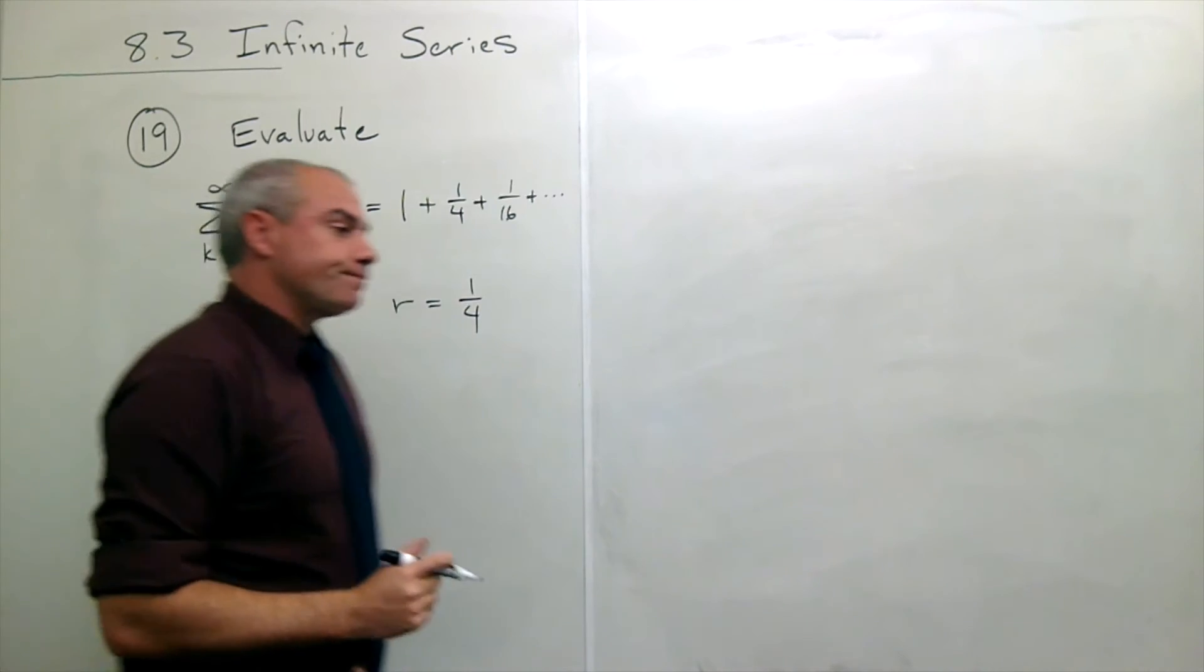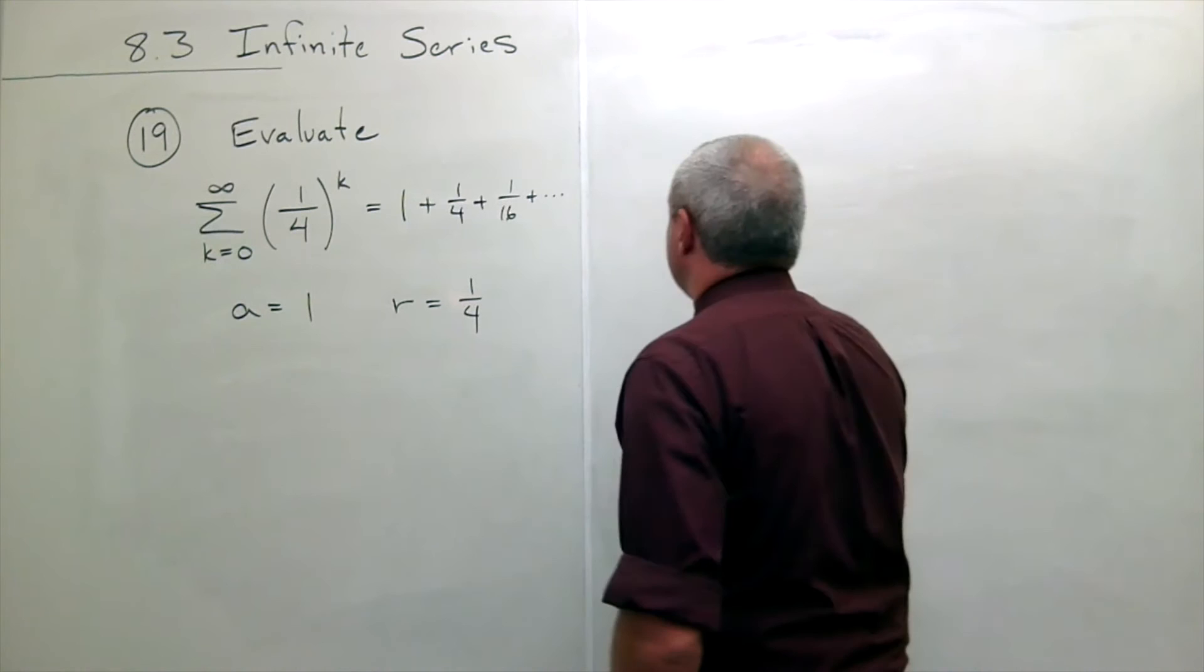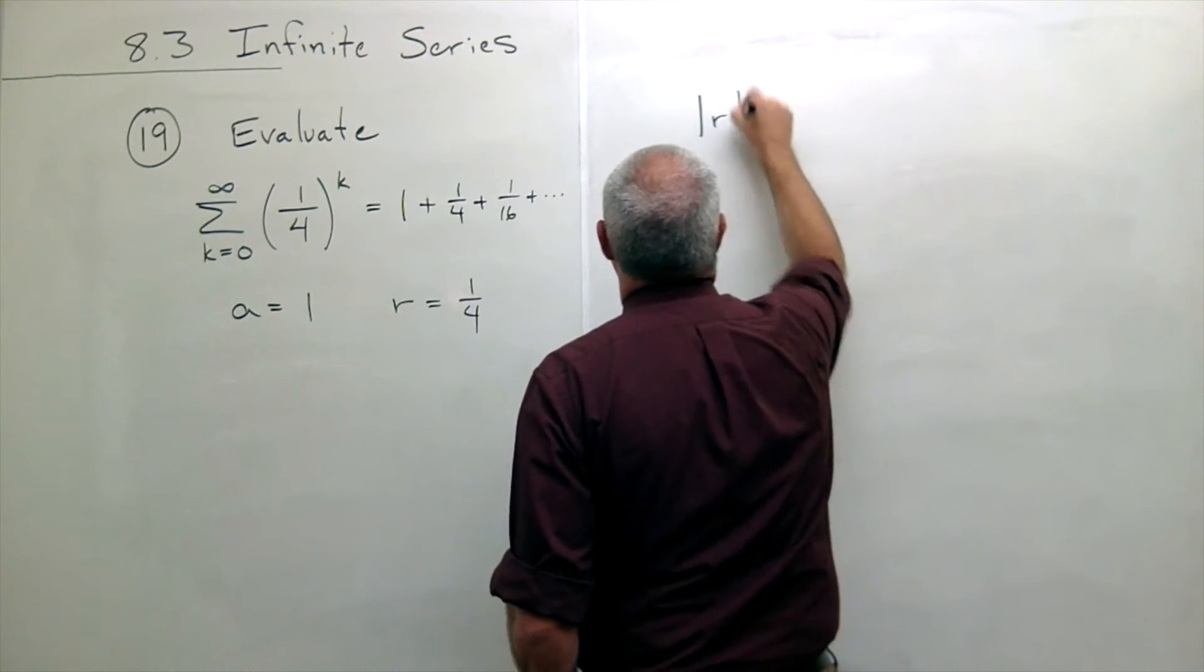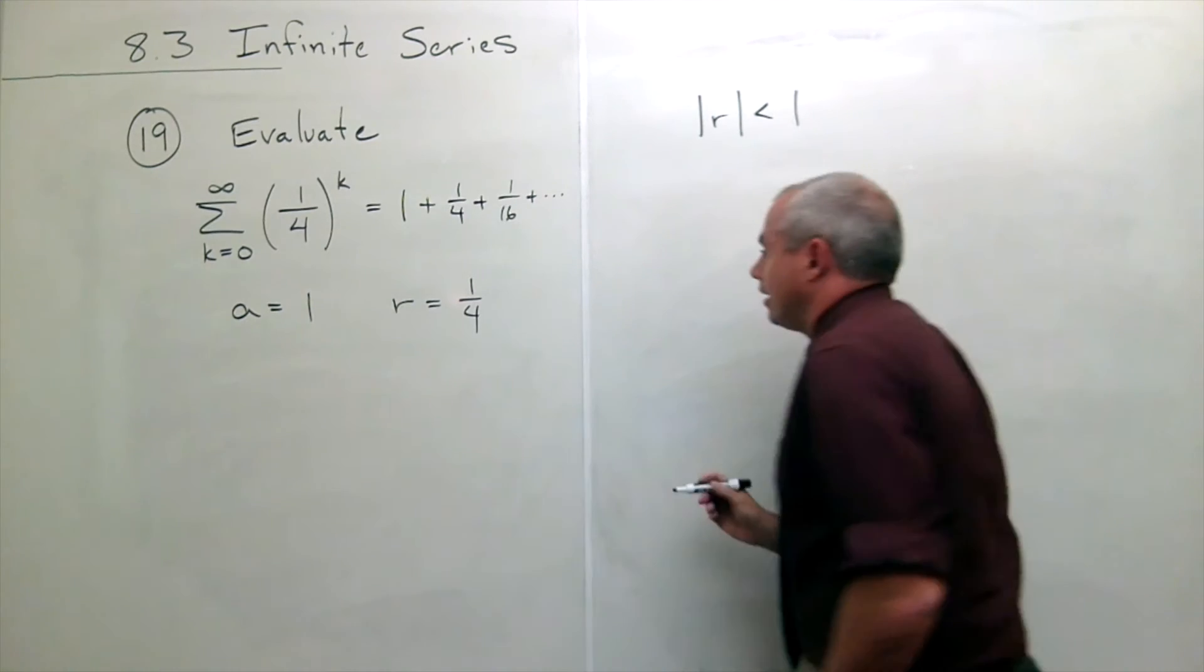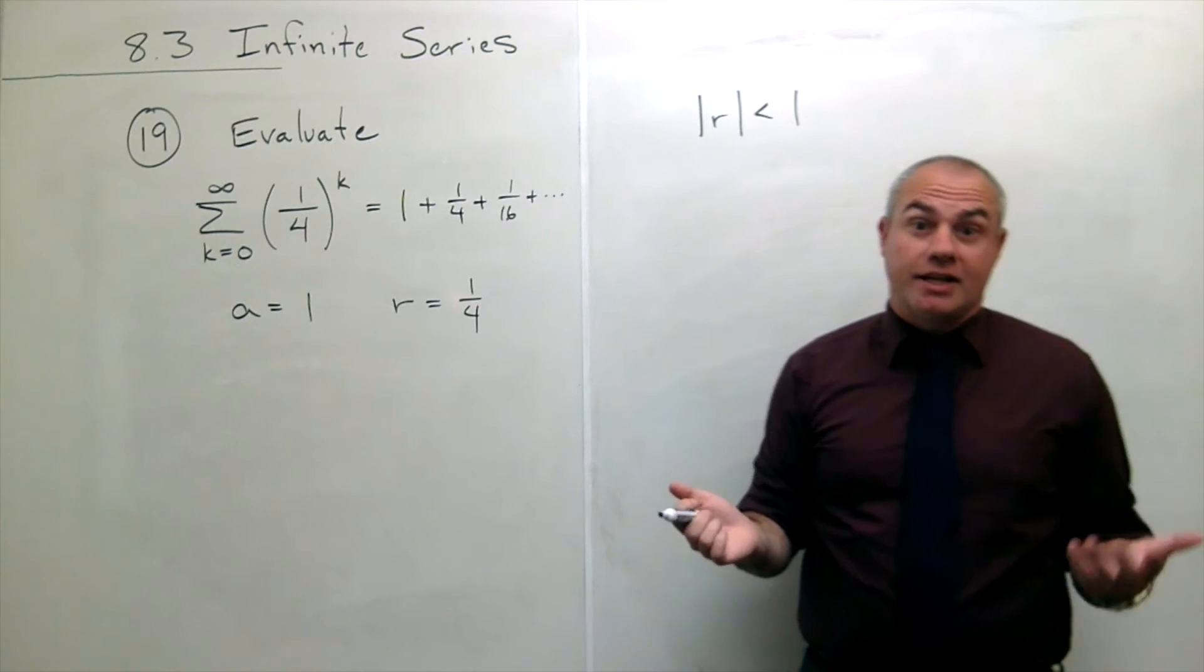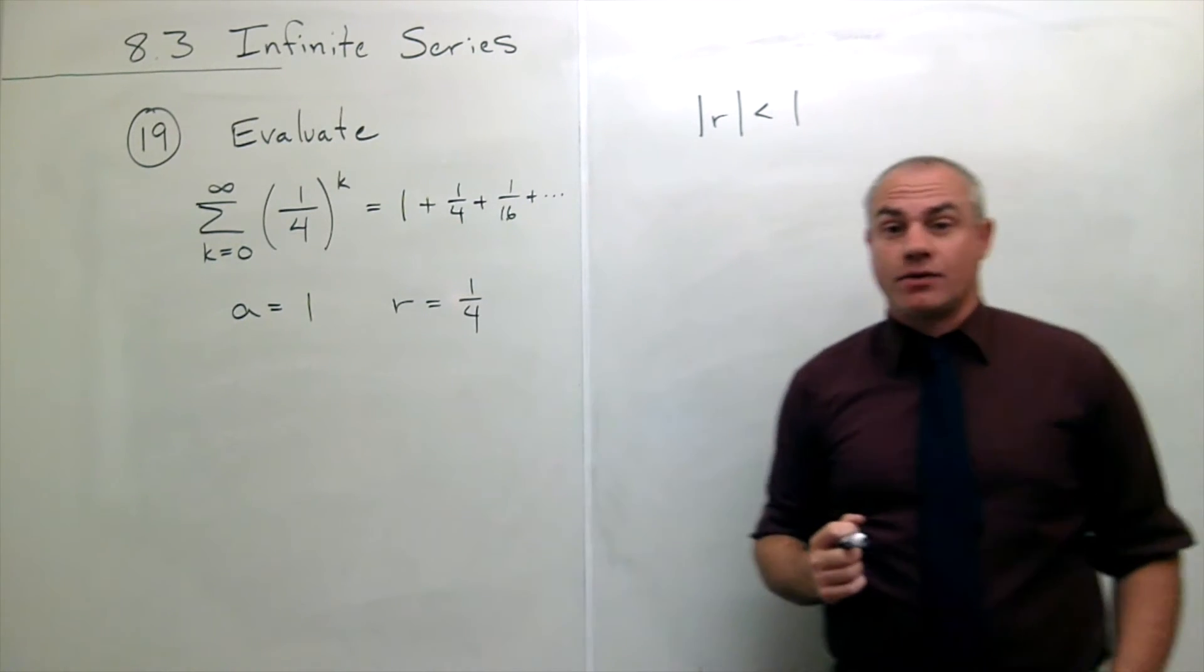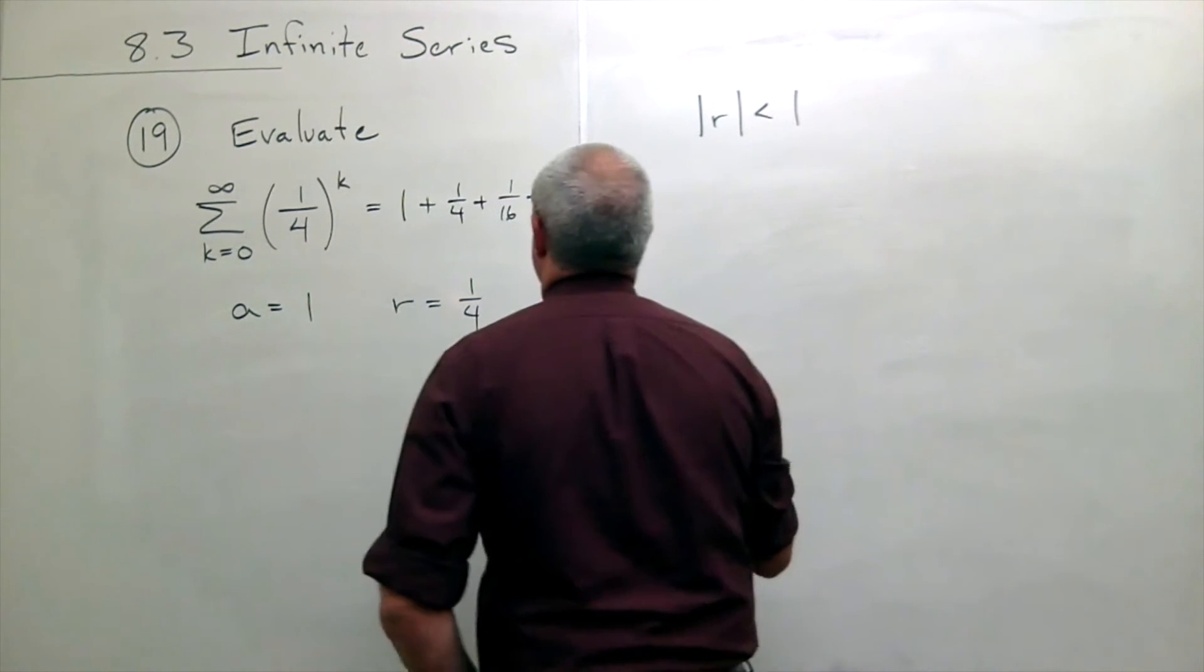Now geometric series converge if the absolute value of r is strictly less than one. So I ask is the absolute value of a fourth less than one? Yes it is. It's a fourth and a fourth is less than one. So this thing will converge.